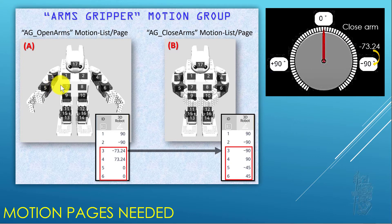So I created two motion lists. One is open arm, with positions for joints 3, 4, 5, 6. This is the open arm motion page. The closing arm page is shown in this picture.